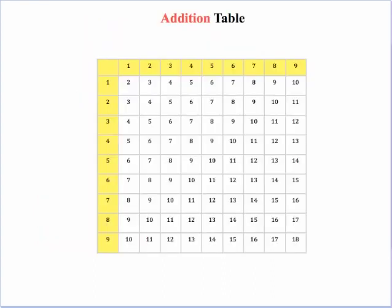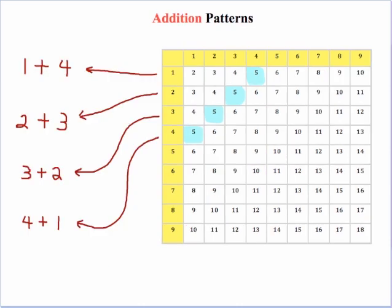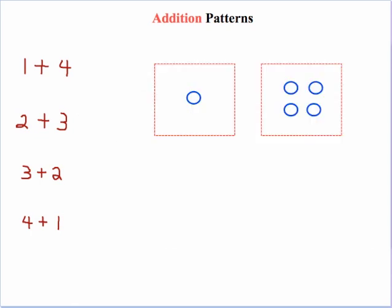Let's look at the addition table first. One thing that students might notice is that across these diagonals, the numbers are the same. For example, for the fives, if we read from left to right, this 5 comes from 1 plus 4, this 5 comes from 2 plus 3, this 5 comes from 3 plus 2, and this last 5 comes from 4 plus 1. If we were to use manipulatives and take 1 from one group and move it over, we have changed 1 plus 4 to 2 plus 3.